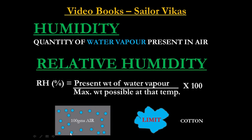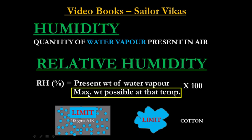The water vapors are far away from each other; let me make it more dense. Just as the cotton has a limit, the air also has a capacity — a limit to hold water vapor. At this limit, whatever the total weight of all the water vapor is, that is the denominator: the maximum weight of water vapor possible at that temperature, multiplied by 100 to obtain the percentage ratio. That is relative humidity.